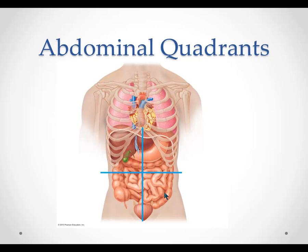So when a patient comes in and complains of abdominal pain or belly pain, the medical assistant or the nurse is going to ask them to point specifically to that pain. So if a patient points to this region of their abdomen, the medical assistant or nurse would write down R-U-Q pain. That tells a doctor specifically where that pain is located, and the doctor can start thinking what organs are located in that region of the abdomen that might be causing a problem for that patient.